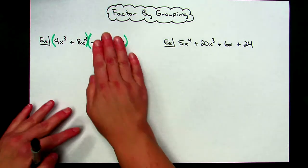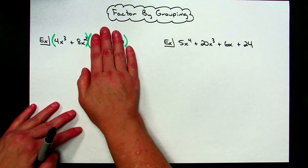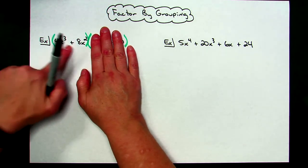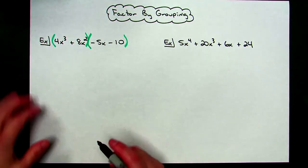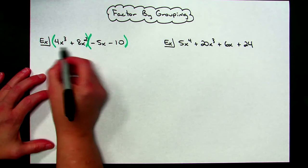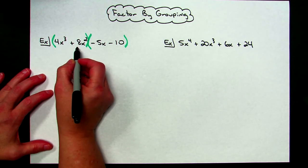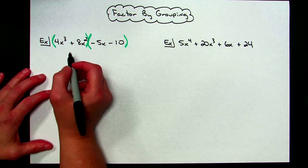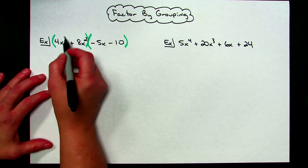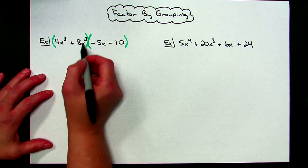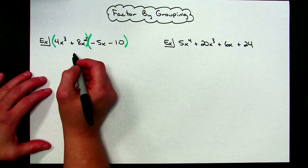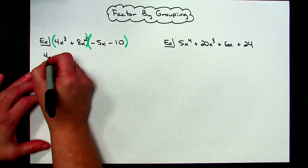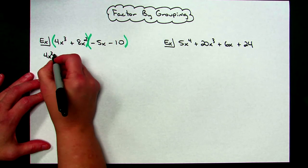So for factor by grouping, I broke this up into two binomials. Now I'm going to ignore the second one to begin with and just focus on this first binomial right here. I am going to take out the greatest common factor. Looking at four and eight, I can take out a four; looking at my variables, I can take out an x squared. So my greatest common factor will be a 4x squared.